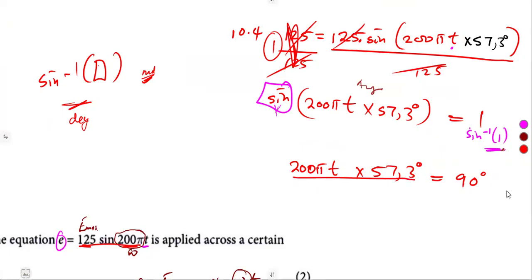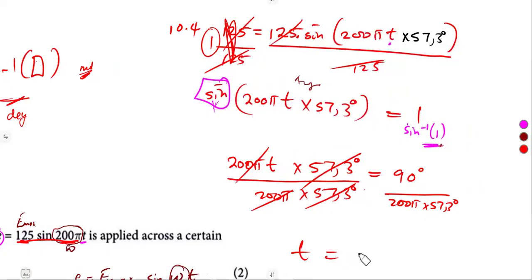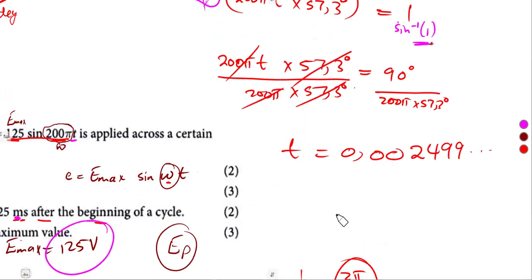So how can you find T? We must divide both sides by 200 pi times 57.3. This is going to cancel. So you remain with the time. So our time equals 90 divided by 200 pi times 57.3. Just use your calculator, divide everything as you see it. It was going to give you 0.002499, something like that, which we can convert to milliseconds. Remember, milli, that's times 10 to the negative 3. So it was going to be 2.5 milliseconds.